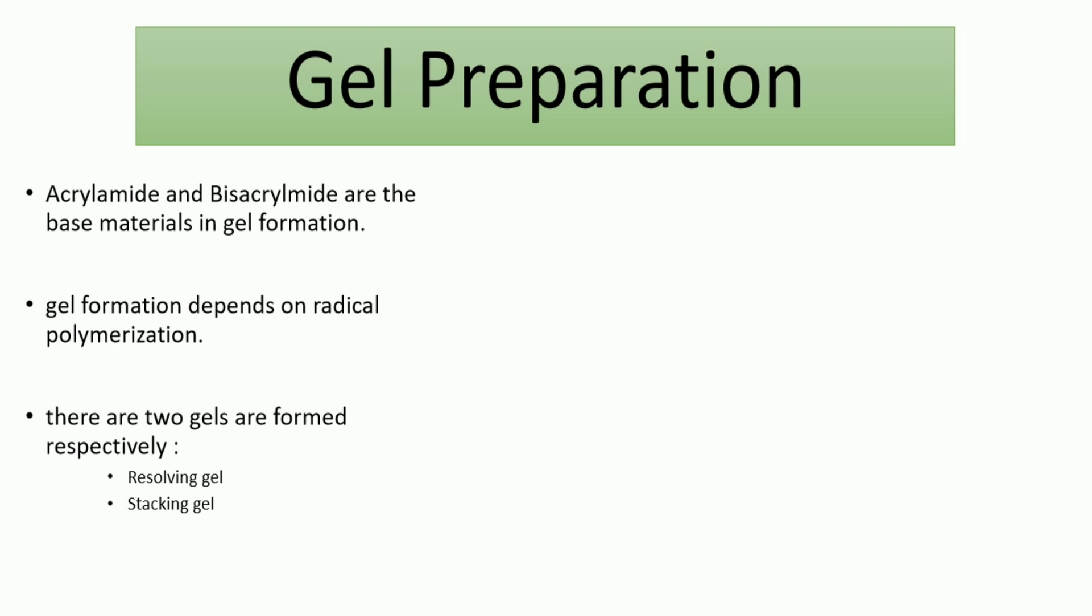The second step is gel preparation. Gel preparation is a main step in any gel electrophoresis technique. We use two molecules for that: acrylamide and bisacrylamide. Those are the base materials to form the sieving gel. The polymerization depends on radical polymerization. As we said in the very beginning of this video, SDS-PAGE is a discontinuous technique, which means it has two phases of the gel: one is stacking and the other is resolving.